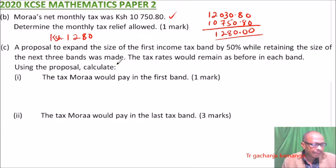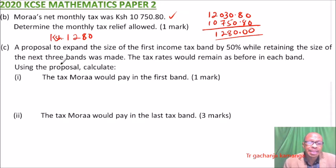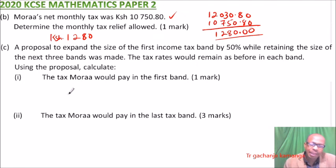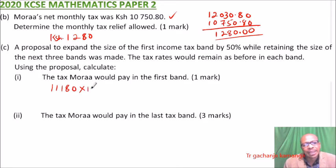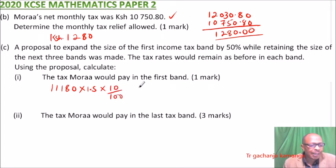For Part C, there is a proposal to expand the first income tax band by 50 percent while retaining the size of the next three bands, with tax rates remaining the same. If increased by 50 percent, the new first bracket is 11,180 multiplied by 1.5, which equals 16,770. This is still charged at 10 percent, giving a tax of 1,677 Kenyan shillings.